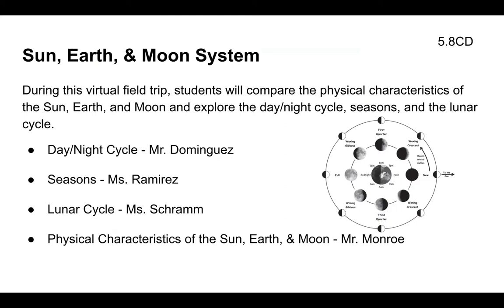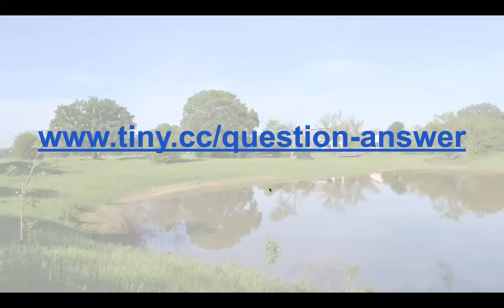We're going to start by exploring the day-night cycle with Mr. Dominguez. Next, we'll explore all four seasons with Mr. Merez. Then we'll explore the lunar cycle with Ms. Sram. And last but not least, we'll look at the physical characteristics of the sun, earth, and moon with Mr. Monroe. You can ask questions by going to www.tiny.cc/question-answer to fill out a short form. We'll do our best to answer all of them.